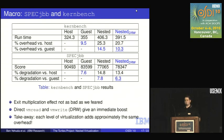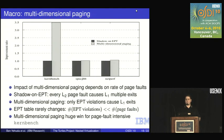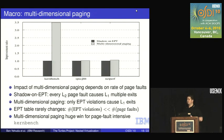Skipping the specJBB results for lack of time — the takeaway is that each level of virtualization adds approximately the same overhead, which is a pretty cool result. For multidimensional paging, the effect depends on how many page faults your workload generates. For NetPerf and specJBB, which don't have many page faults, we see a very small improvement. For Kernbench — compiling the Linux kernel in a loop with lots of page faults — multidimensional paging gives a really nice 3.5 times improvement.